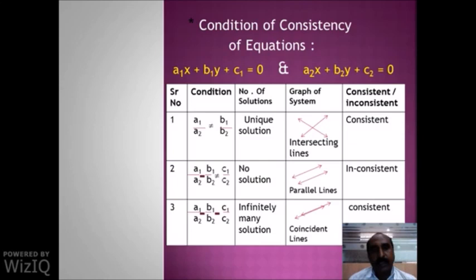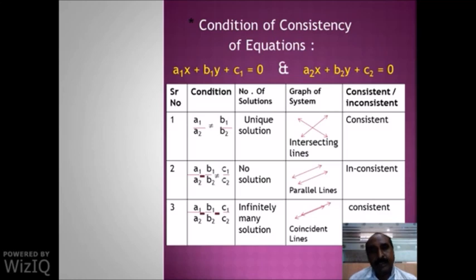Condition 3: If a1/a2 equals b1/b2 equals c1/c2 — that means the ratio of all coefficients are equal — then such equations have infinitely many solutions. The graphical representation is coincident lines, meaning overlapping lines. These equations are also called consistent equations.